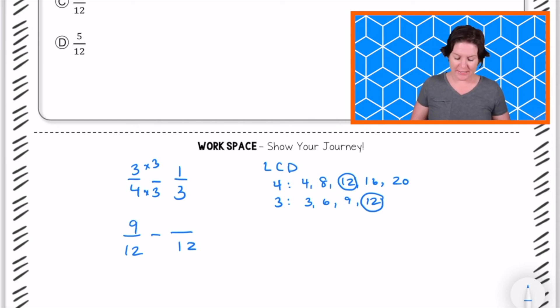So that would be 9/12. Then we're going from the denominator of 3 to the denominator of 12. So 3 times 4 equals 12. Same on the bottom, same on the top. 1 times 4 is 4.